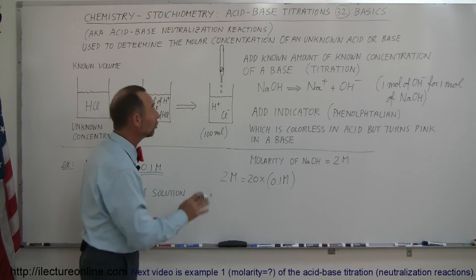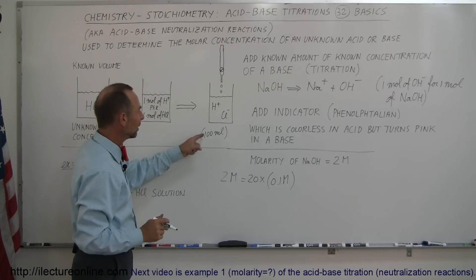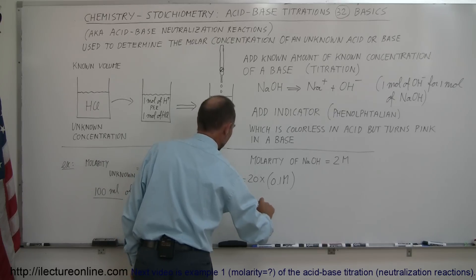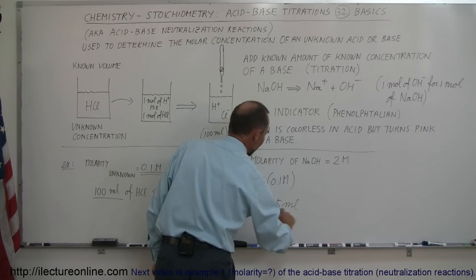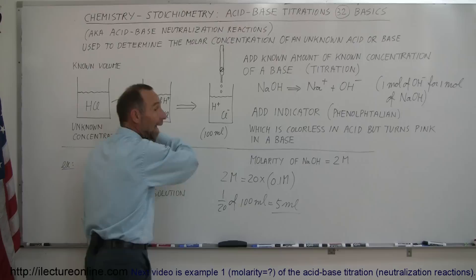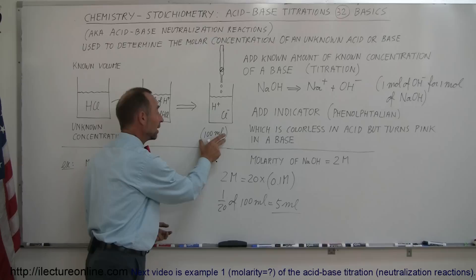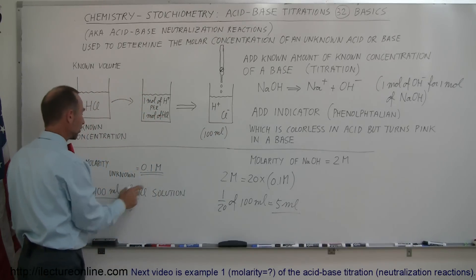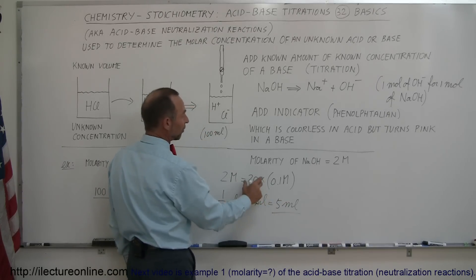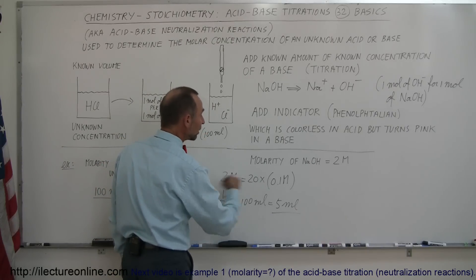Which means that you only need one-twentieth as much of this solution to neutralize 100 milliliters of that. What is one-twentieth of 100 milliliters? One-twentieth of 100 milliliters is only 5 milliliters. Since the base is 20 times as concentrated as the acid, we only need one-twentieth as much to neutralize it.